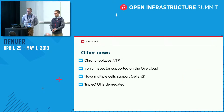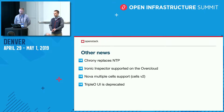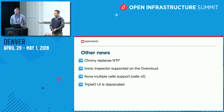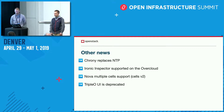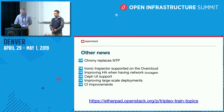A few smaller Stein changes: Chrony is the default time service in CentOS 8, replacing NTP. Ironic Inspector support has been added to the overcloud — previously we had bare-metal-to-tenant support with Ironic on the overcloud but no Inspector. We've also added the ability to configure Nova Cells with Cells v2. And the Triple O UI is deprecated in the Stein release.